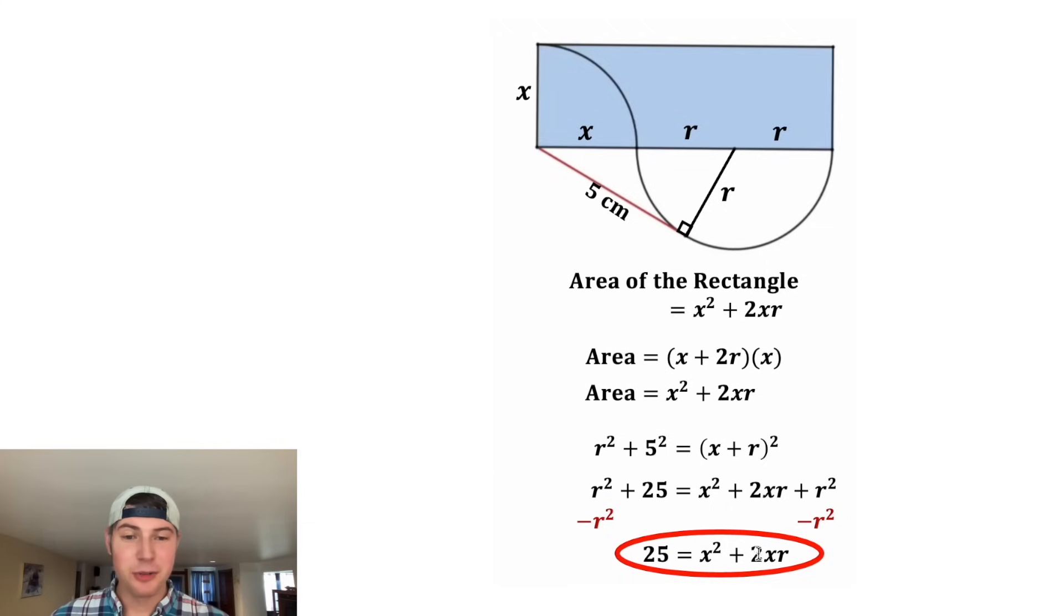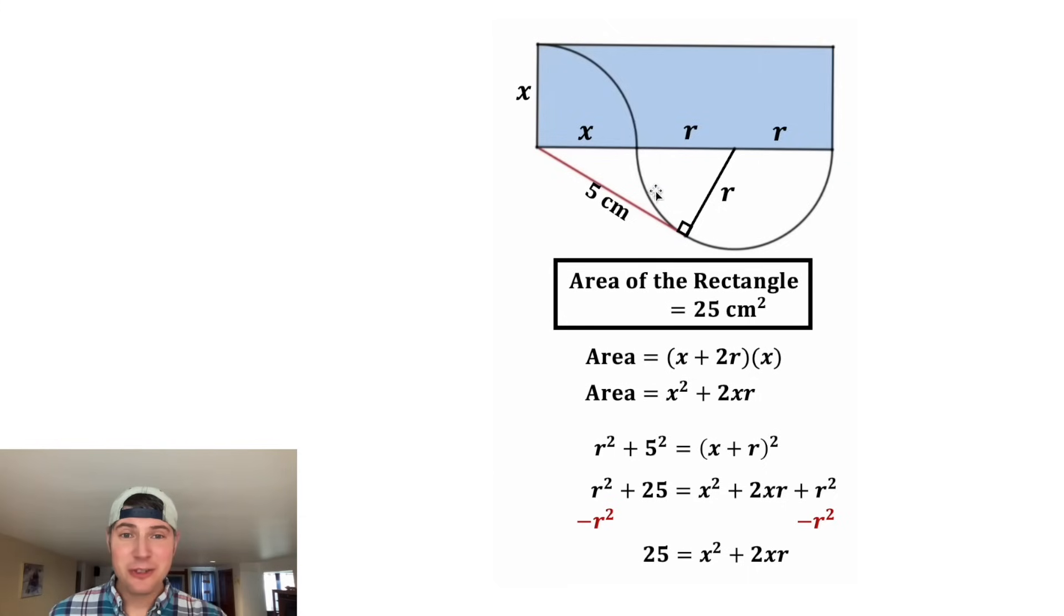So we can change this to 25, and that's the answer to our question. Let's give it a label of centimeters squared and put a box around it. Even if these radii are not equal to each other, we can find the area of this rectangle is exactly 25 centimeters squared. How exciting is that!